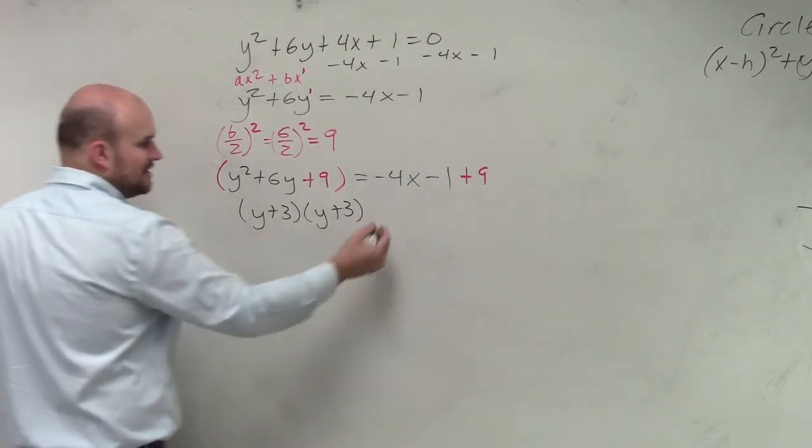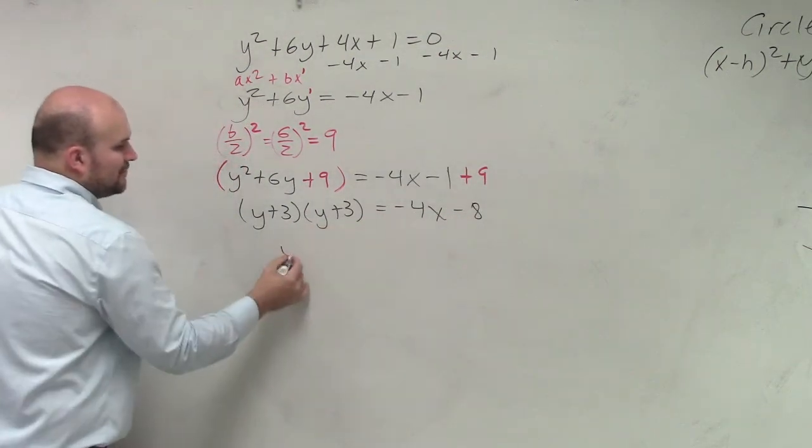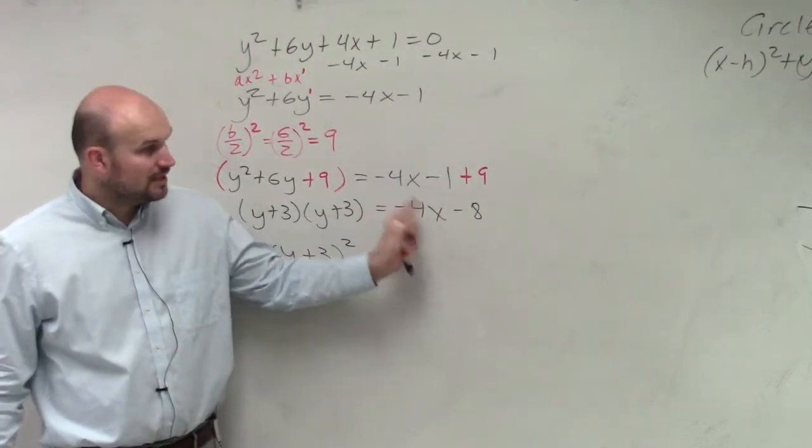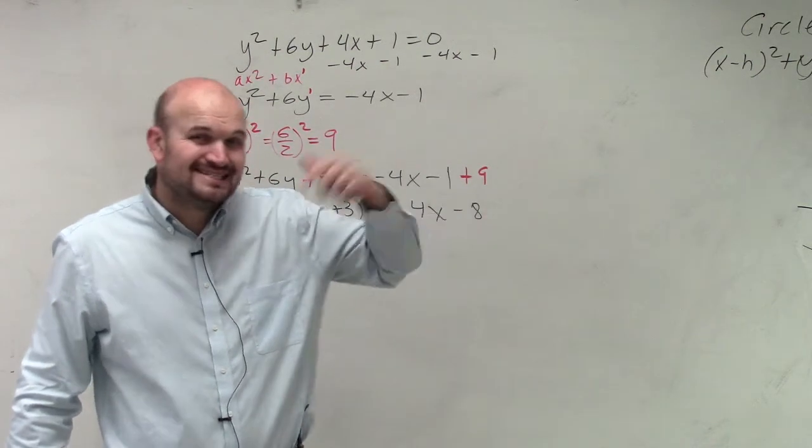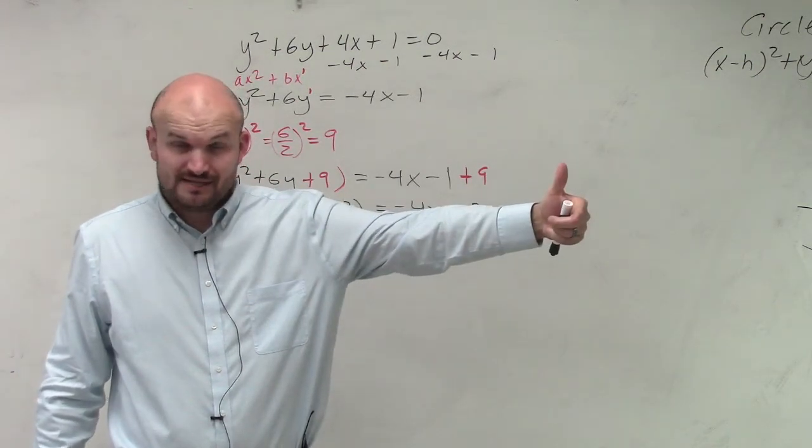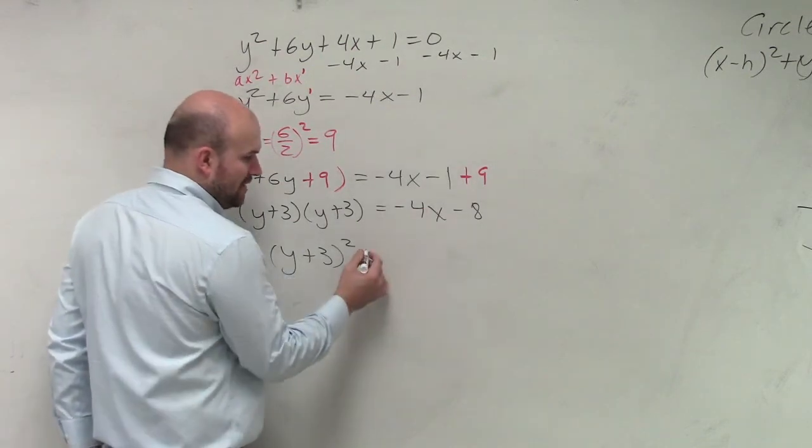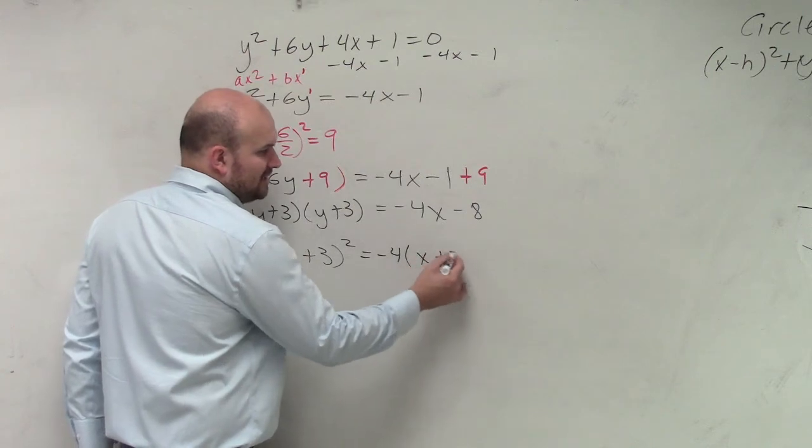But you guys should know that factors to the perfect binomial times squared. y plus 3 times y plus 3. This becomes negative 4x minus 8. So therefore, this gets to y plus 3 squared. Now, I want you guys to understand. Do you guys see how the formula is 4p times x minus h? So what we want to do is we've got to make our x have a coefficient of 1. So we have to factor out a negative 4 so it's x plus 2.